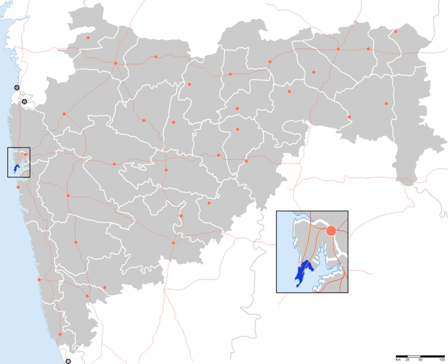The city area is called the Island City, or South Mumbai or Old Mumbai. It extends from Kalabha in the south to Mahim and Sion in the north. The city has an area of 157 square kilometers and a population of 3,085,411.